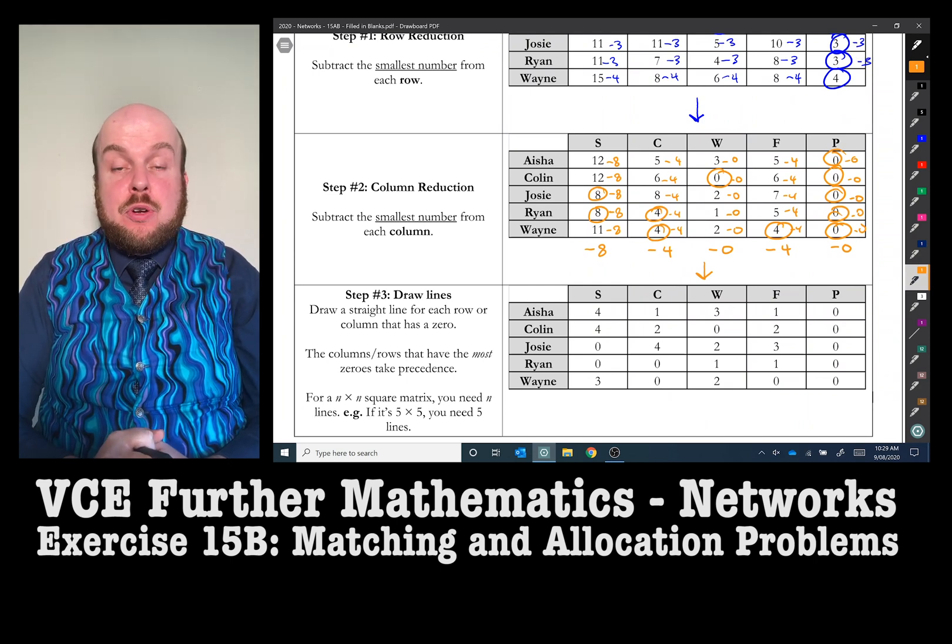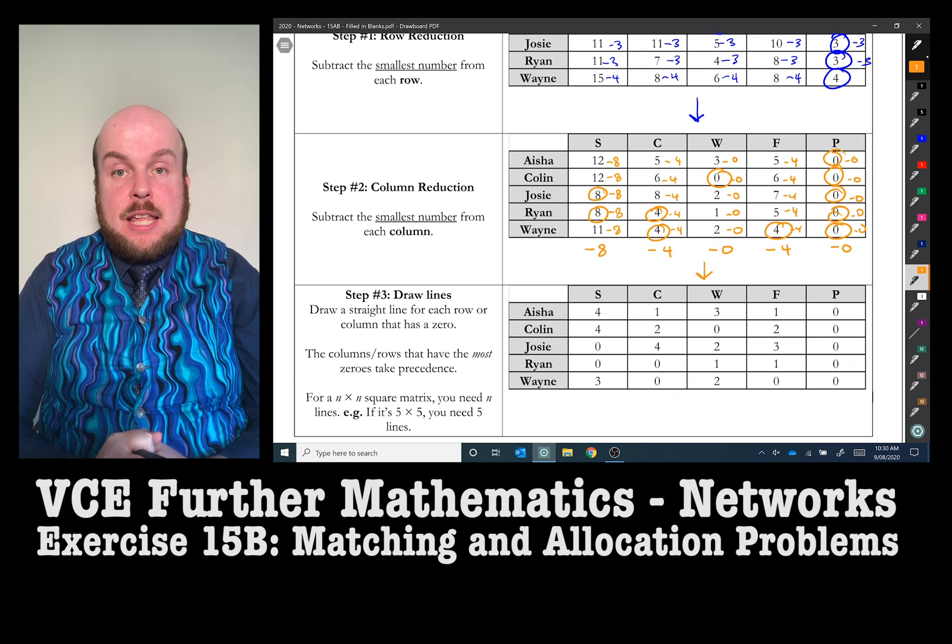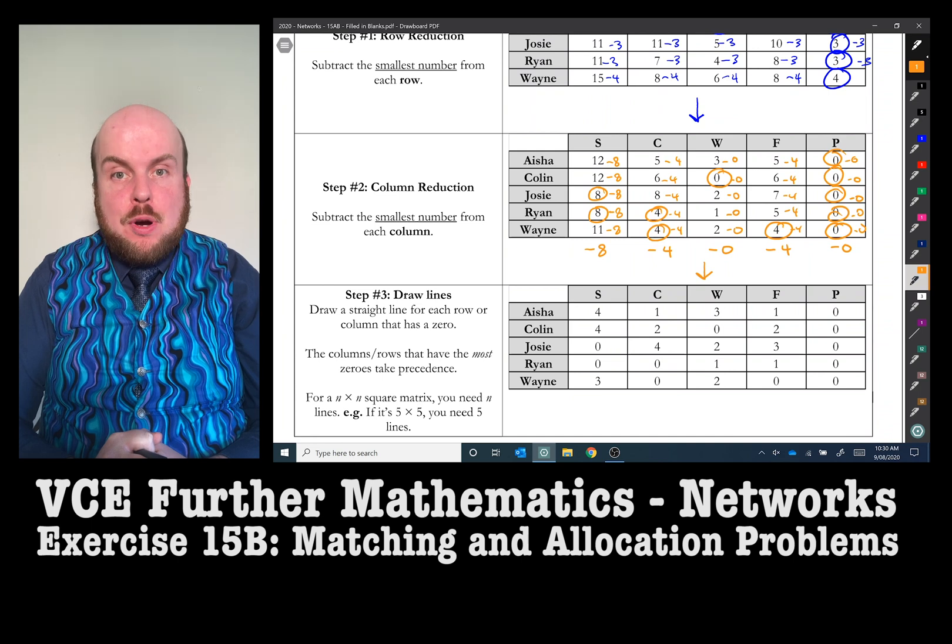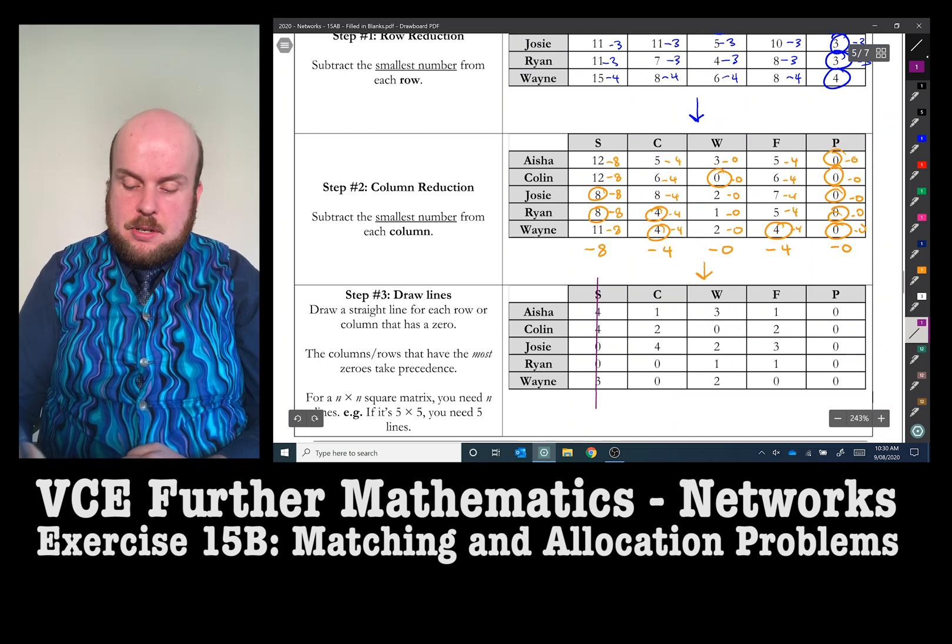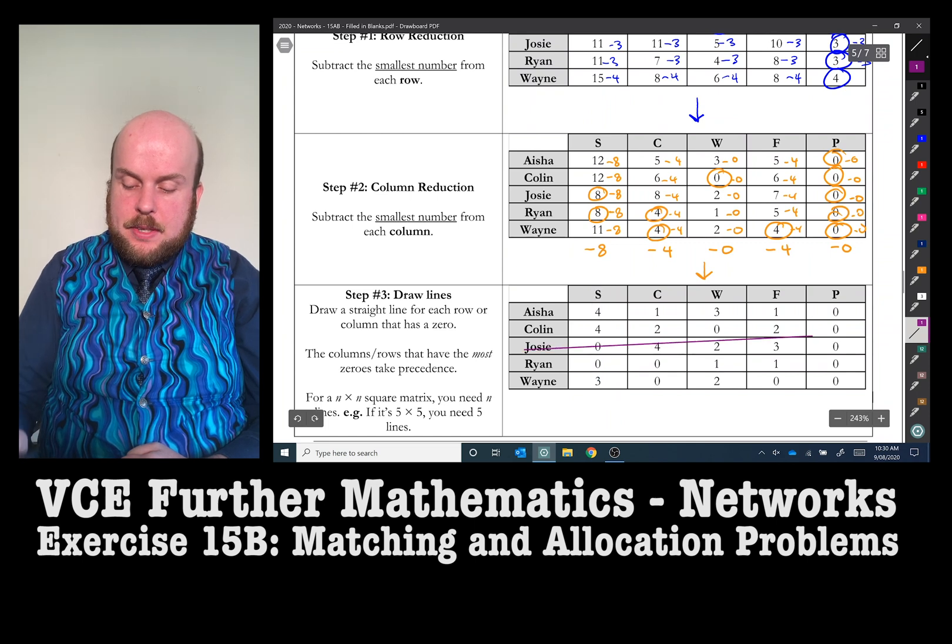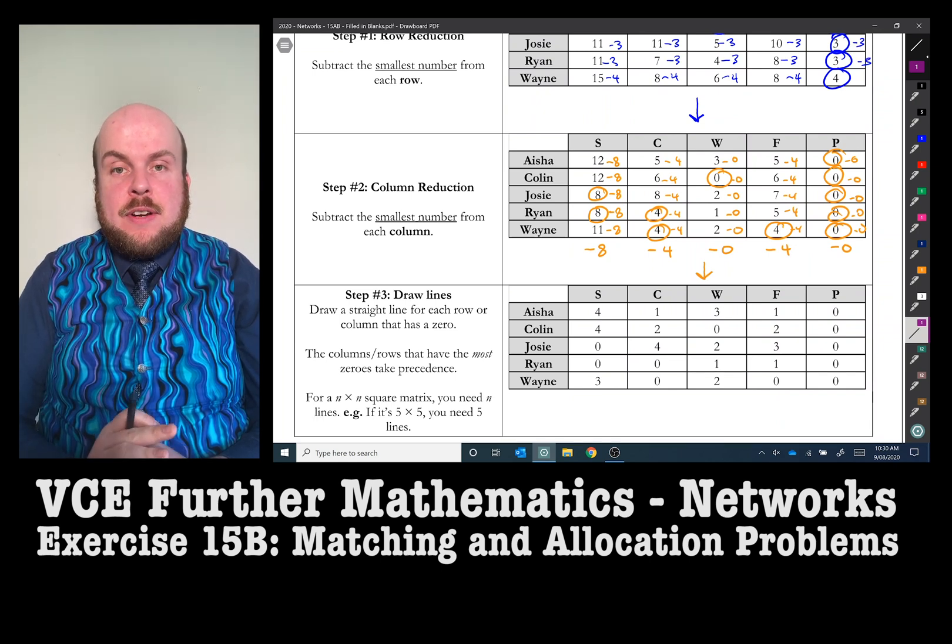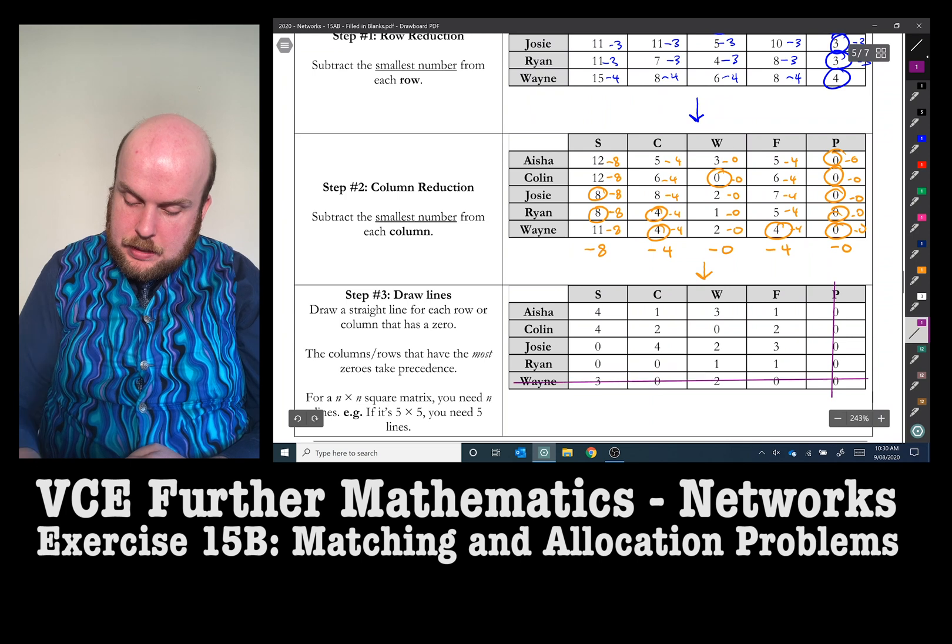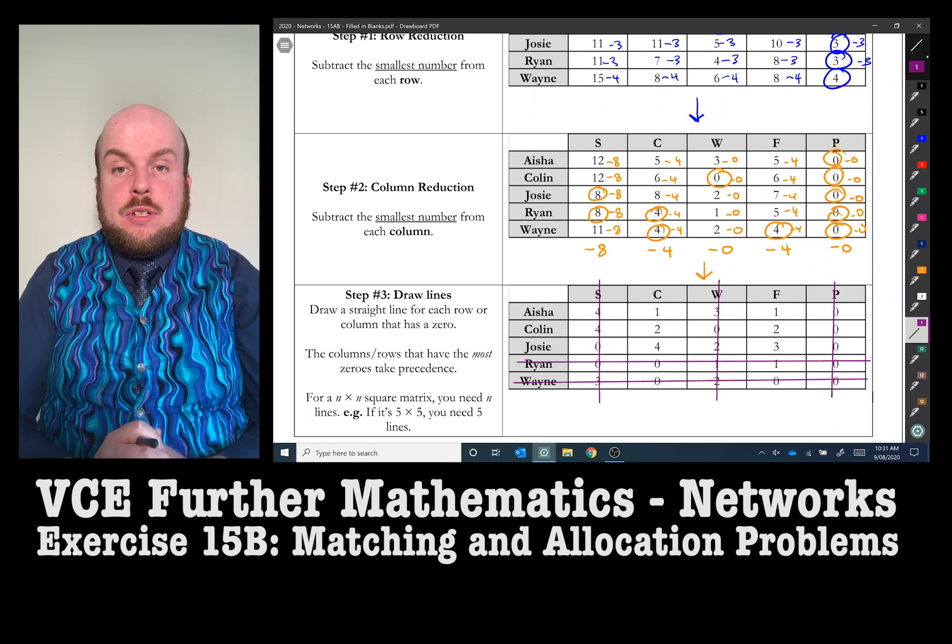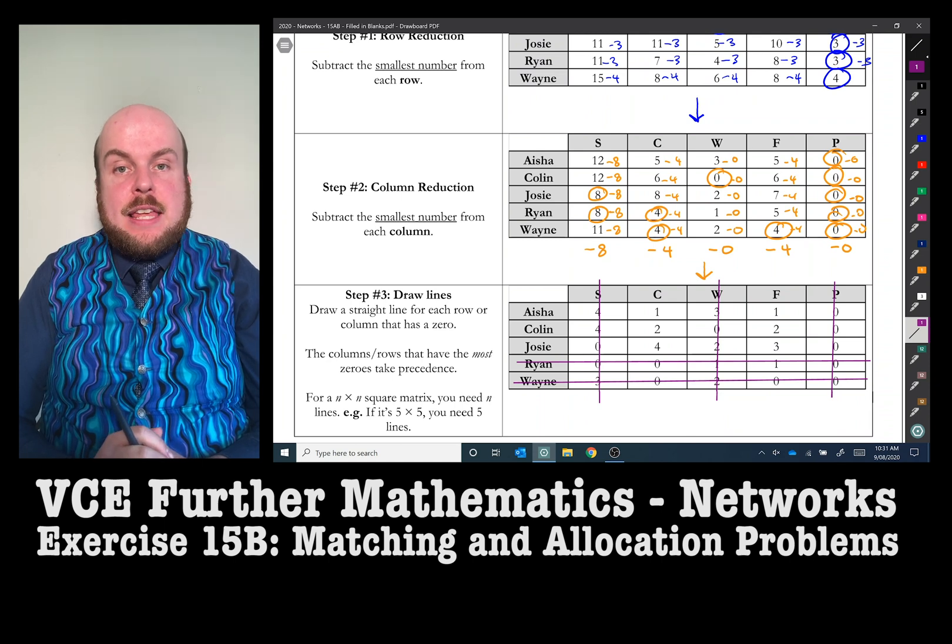Once you've subtracted that, we now need to cover the grid with lines. You need to identify how many lines does it take such that the least number of lines can cover the most number of zeros. And when I say cover, I mean either going by this direction or alternatively, this direction. So get out your lines and get out a straight line and see where you need to identify the least number of lines to cover the most zeros. So start with the columns or rows that have the most zeros and cover them with lines.